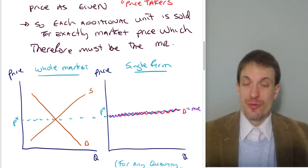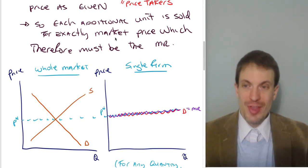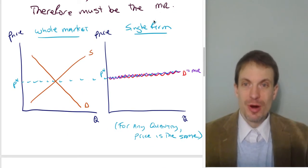Each additional unit for that firm in the competitive market is sold for exactly the market price, meaning that is their marginal revenue.